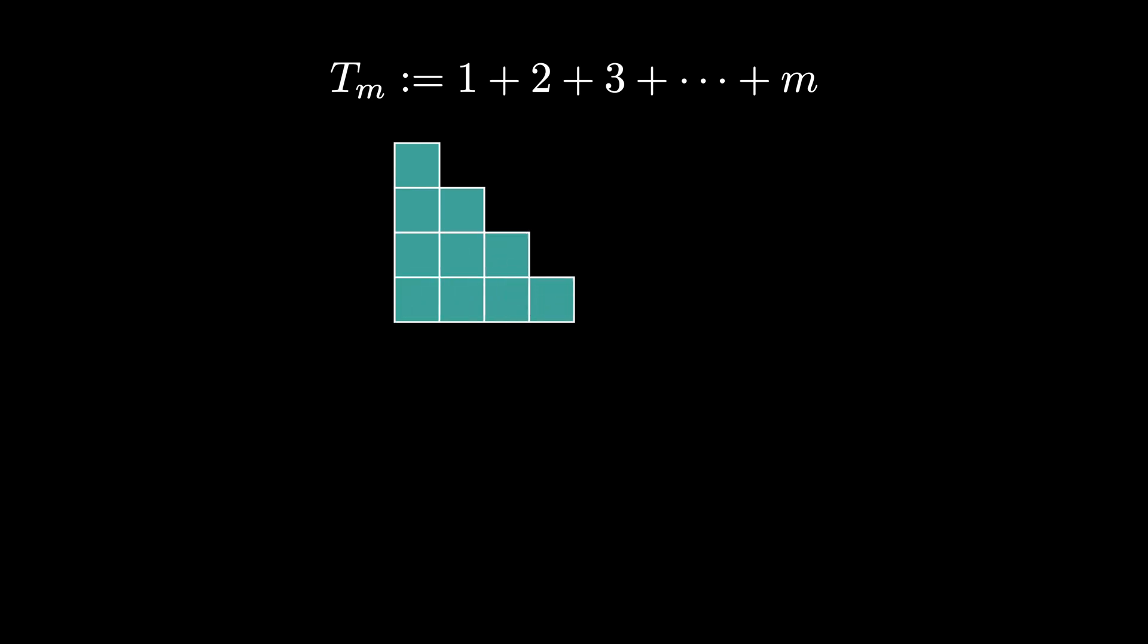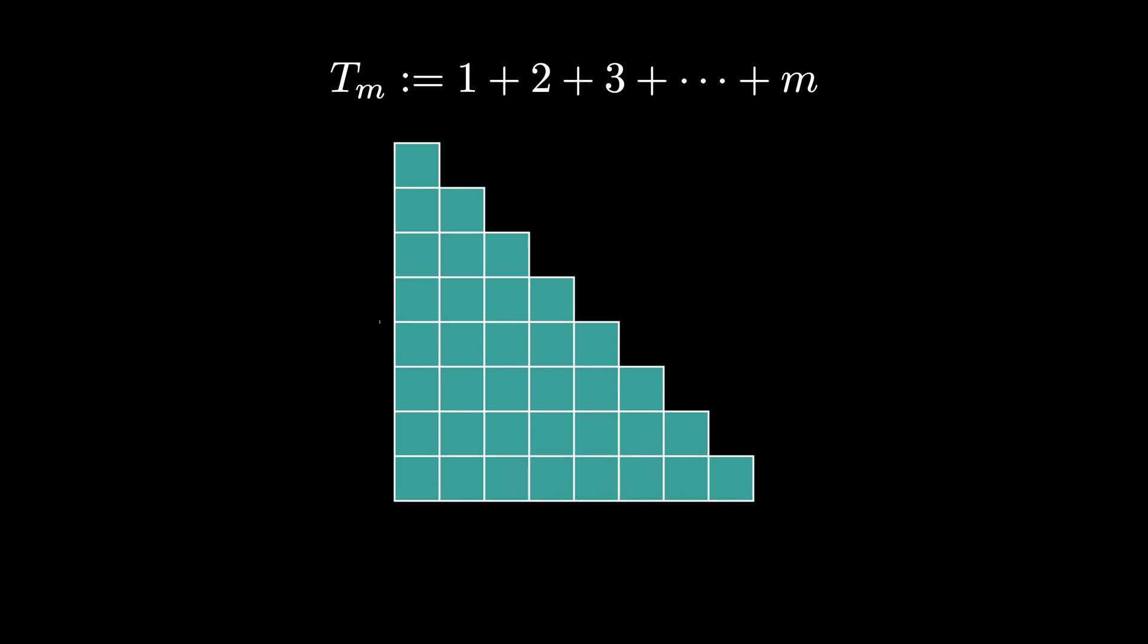This number can be represented by a triangular stack of squares like this one here, where there's one square in the first row, all the way down to m squares in the bottom row.